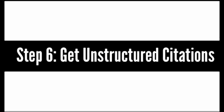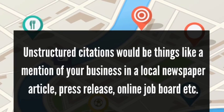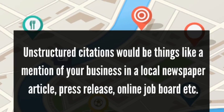Step 6: Get Unstructured Citations. Unlike submitting your site to a business directory where your full information will be placed in a structured format, unstructured citations will be things like a mention of your business in a local newspaper article, press release, online job board, and things like that. Unstructured citations are important because they let Google know that people are talking about your business, a key factor in ranking higher in the local search results. Here are some ideas for places where you can obtain unstructured citations: Yelp and Google Plus local customer reviews, events, press releases, your bio information on sites like LinkedIn, and charities you contribute to. I've included two additional articles on how you can get unstructured citations in the resources link below this video.